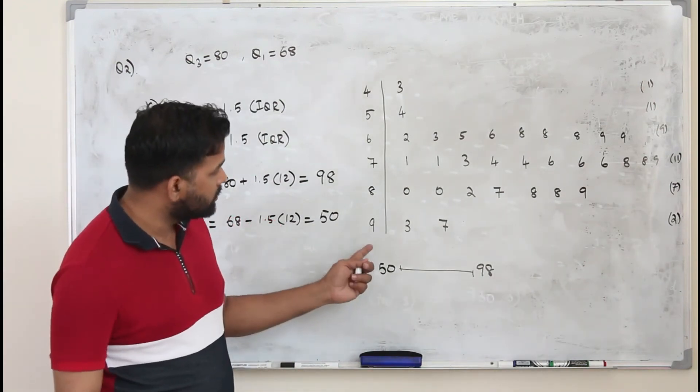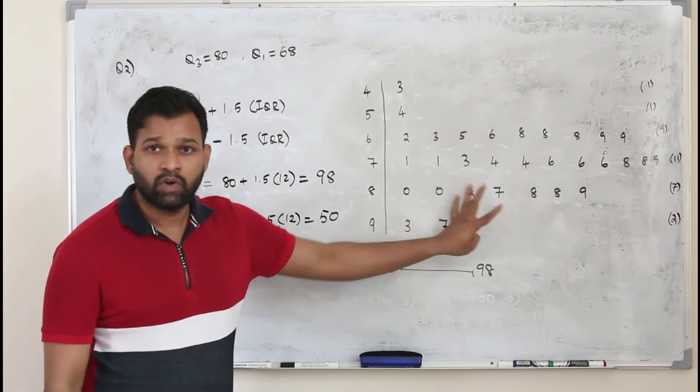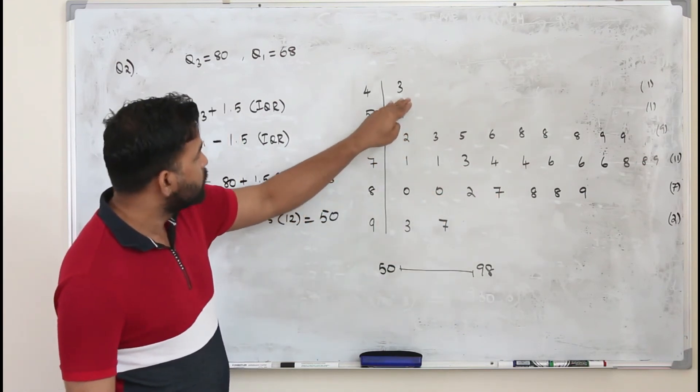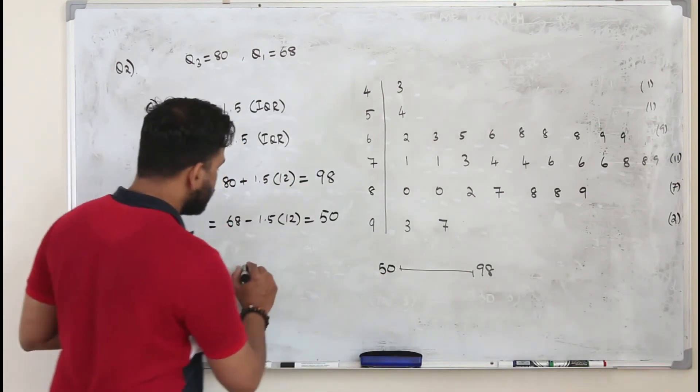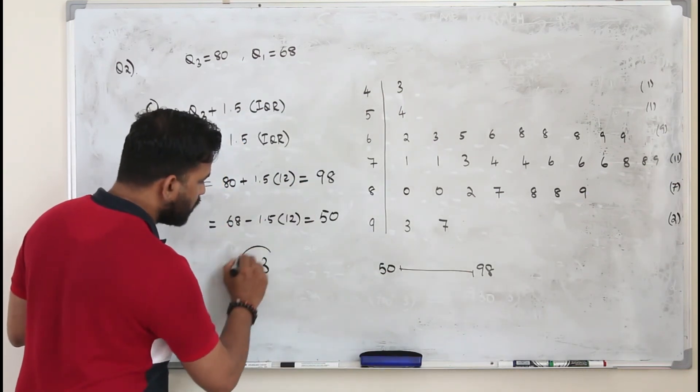So in this case, we have the highest value is 97, so no outlier here. But the lowest value is 43. 43 is less than this one. So 43 is an outlier here.